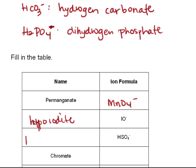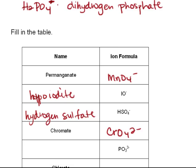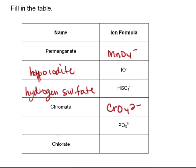HSO4- is hydrogen sulfate. Chromate is another you should memorize. That is CrO4 2-. And then we have PO3 3-, that is phosphite. And chlorate is ClO3-. And that is naming and identifying oxyanions.